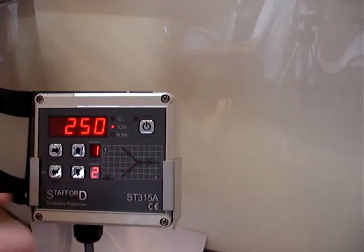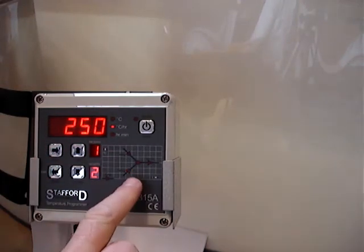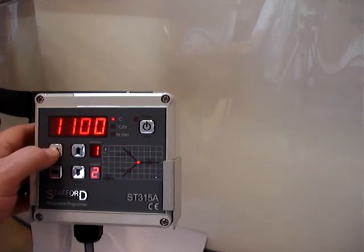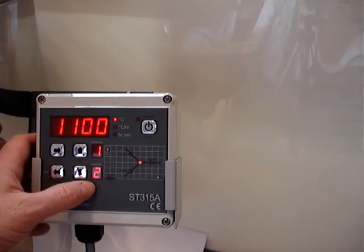So the second climb speed, which is now shown in segment 2, is currently 250 degrees an hour, and that's a heating ramp, as indicated by the light. Our top temperature in this particular case, on segment 2, is 1100 degrees C.